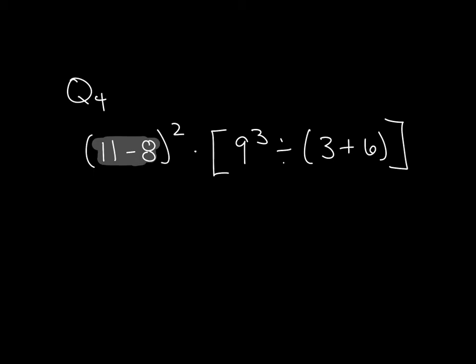Let's take a look at question 4. Question 4 is 11 minus 8 squared times the quantity of 9 to the third divided by 3 plus 6. All right, so what I want to do in first here is inside the parentheses.